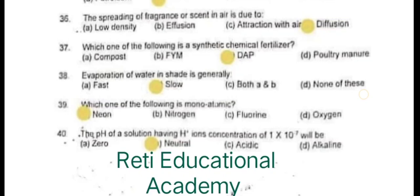Question number 40: The pH of a solution having H+ ion concentration of 1×10⁻⁷ will be neutral.